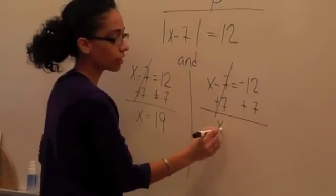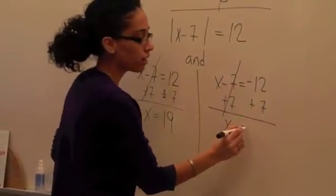That cancels out, the x comes down, negative 12 plus 7 is negative 5.